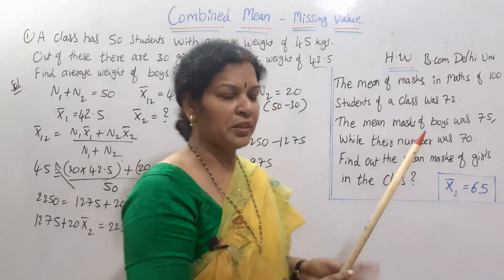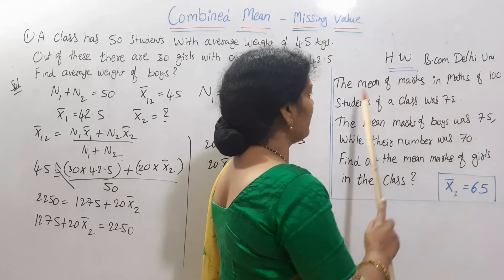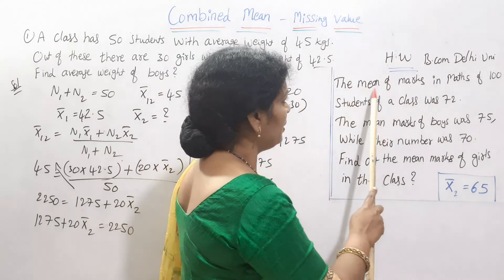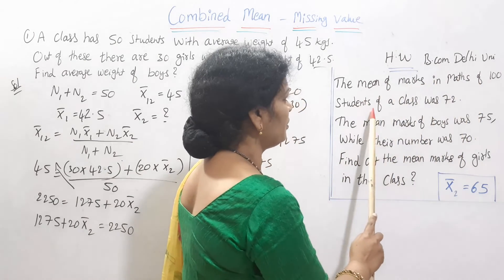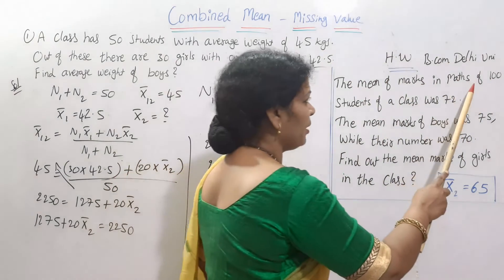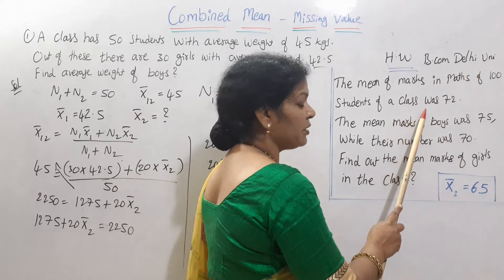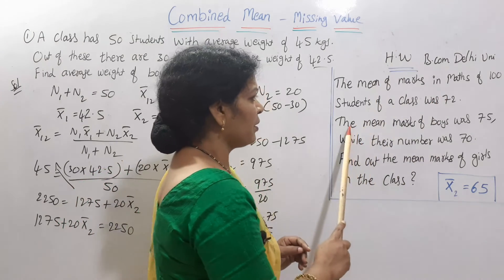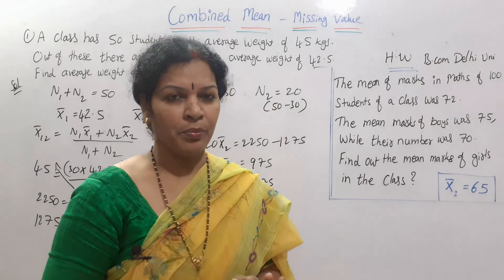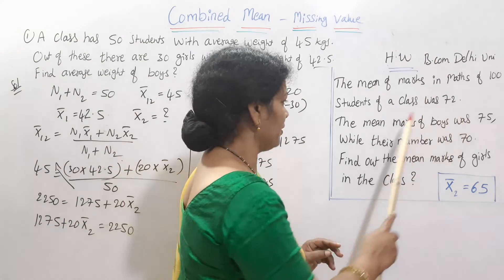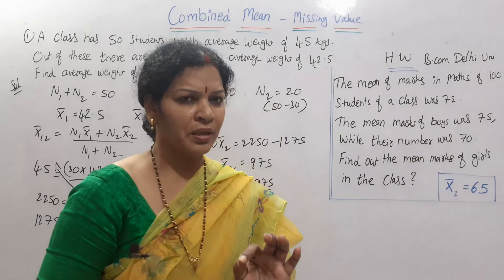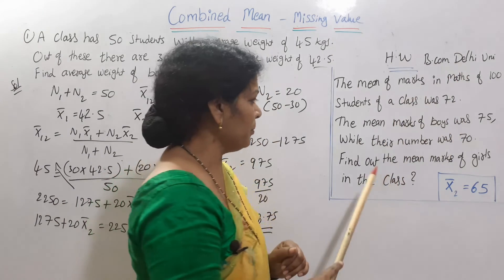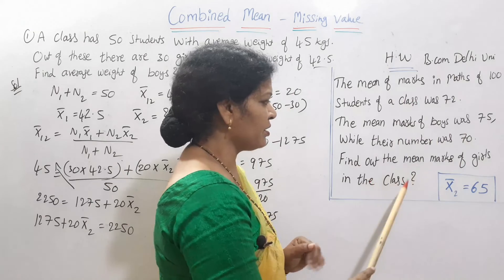This is a BCom Delhi University problem. Next problem: The mean marks of 100 students of a class was 72. The mean marks of boys were 75 and their number was 70. Find out the mean marks of the girls in the class.